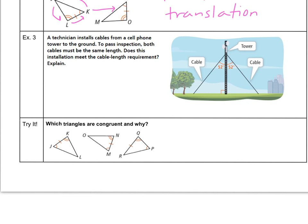Let's try this application question. A technician installs cables from a cell phone tower to the ground. To pass inspection, both cables must be the same length. Does the installation meet the cable length requirement? Explain. If we look at this picture, notice we have a triangle on the left-hand side and a triangle on the right-hand side. Now the tower is in the middle, and what's unique about this picture is that the tower is congruent to itself in both triangles. Notice we have angle 52 on the top left and angle 52 on the top right. Now, taking a look at the bottom, if we have a right angle on that left-hand side, we can conclude we have a right angle on the right-hand side as well because they form a linear pair. Now if we look at the markings, on each triangle we have an angle, we have the side, and then we have another angle.